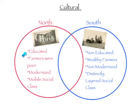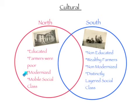The North starts a tradition of public education, while the South has no strong tradition of public education. In the North, poor farmers were found at the bottom of the social ladder. In the South, wealthy plantation owners were found at the top of society. The North has new forms of entertainment for the masses and growth of newspapers for the public. The South has some fear of modernization and allowed more social mobility between classes.